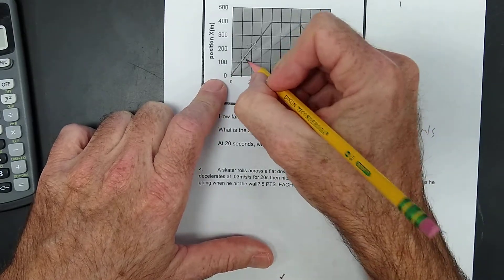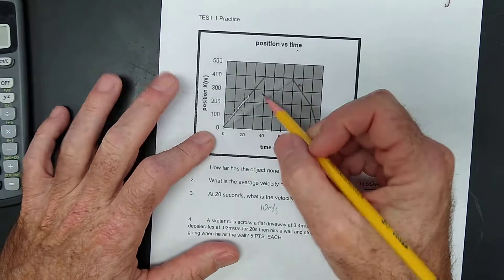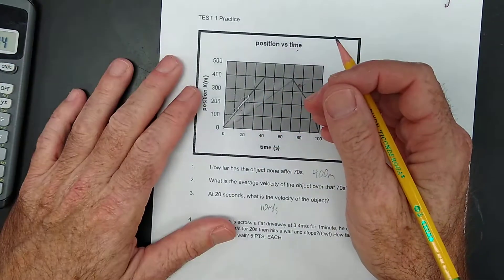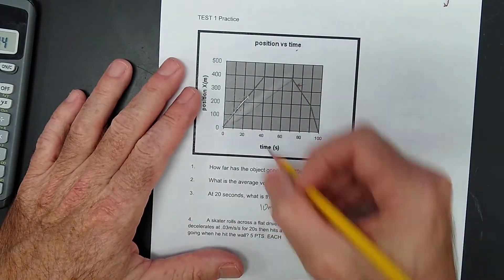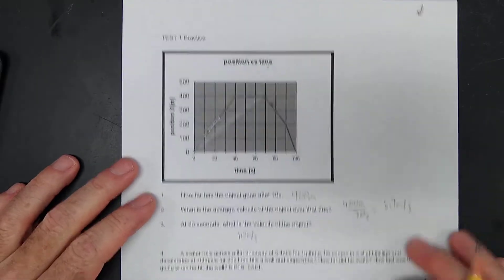Or you can just look at the slope of the line. The slope of the line on a distance over time graph, the slope of the line is going to give you the velocity. So again, it'd still be 10 meters per second. That'd still be 200 over 20, right? Alright, here we go.